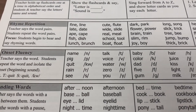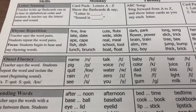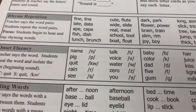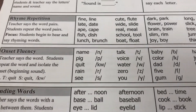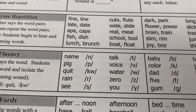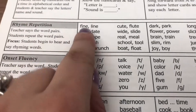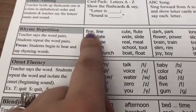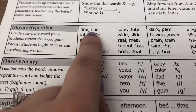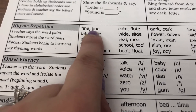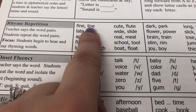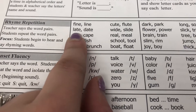We are in our phonemic awareness training for day seven. We are starting with rhyme repetition. I'm going to say the rhyme and then your child is going to repeat that rhyme after me. For example: fine, line — your child would say 'fine, line.' Repeat after me with every rhyme.